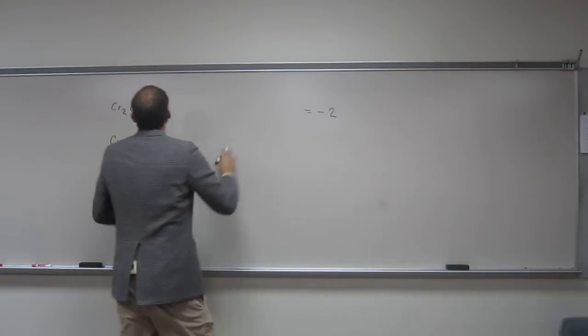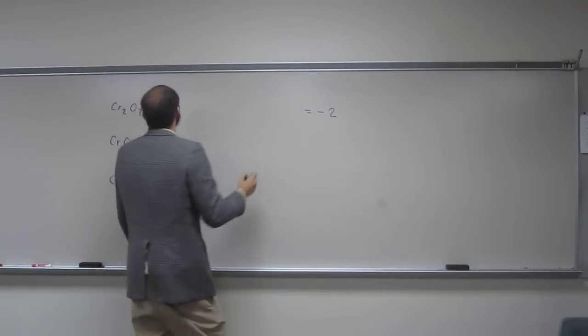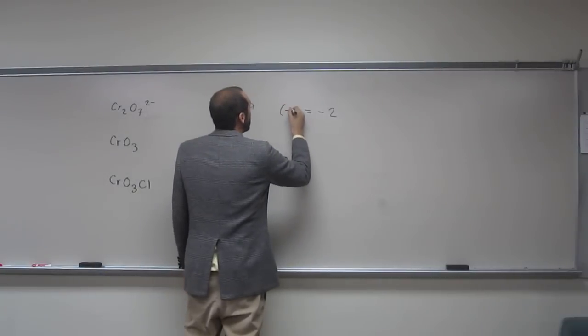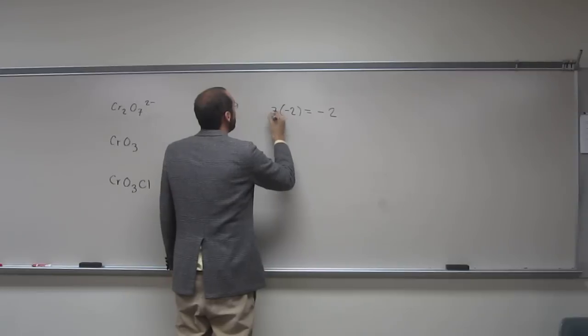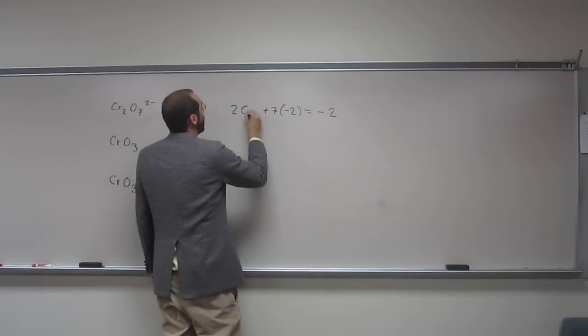So in this case, you're going to set the whole thing equal to minus 2 because it's got a minus 2 charge. Oxygen is minus 2, and there's 7 of them, plus 2 chromiums.